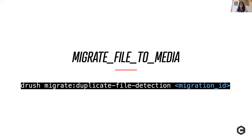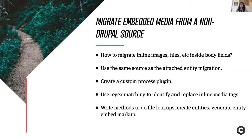One cool feature of this contrib project is that it does duplicate file detection. By running the migrate command with the migration ID of your images or files migration, it creates a binary hash of each file, stores it in a table in the database, and when you go ahead and run your media migration, it will double-check against that table and will not import if the file already exists.